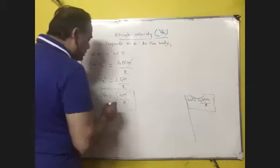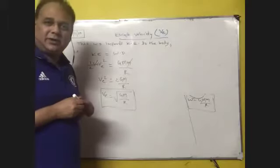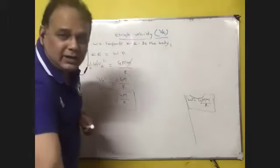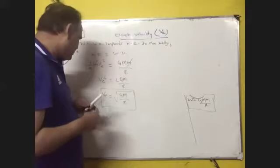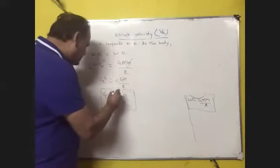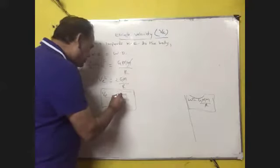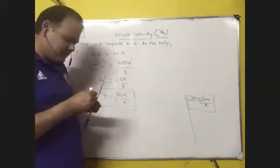So v equal to under root 2GM upon R. And look at the beauty of this derivation and formula. Try to figure out the root two.